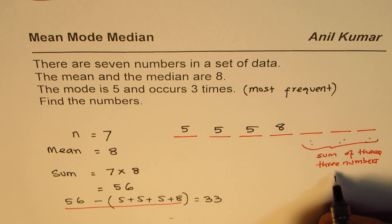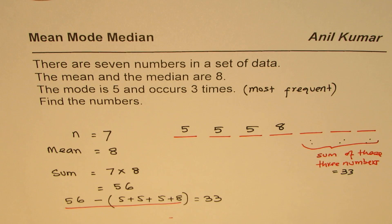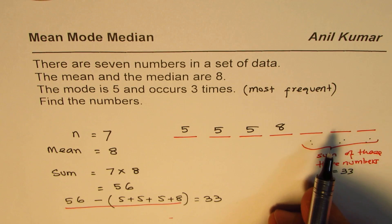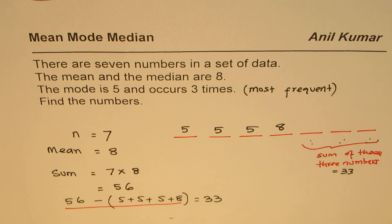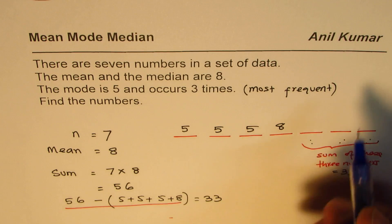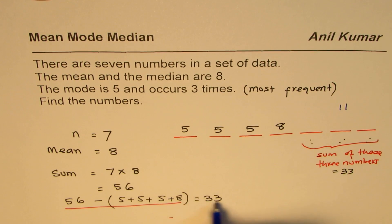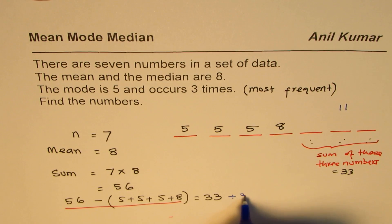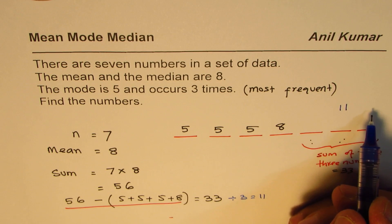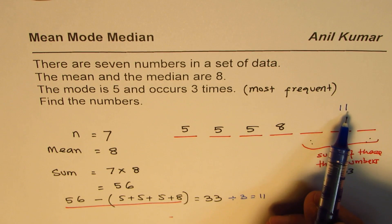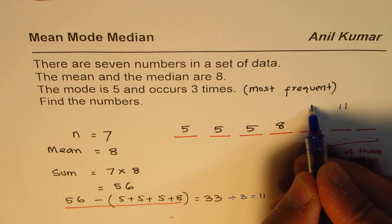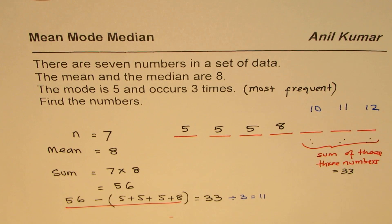The sum of the three remaining numbers should be 33, and they must be in increasing order. One approach: divide 33 by 3 to get 11, so we could try 11, 11, 11. But if we use three 11s, the mode would also be 11, conflicting with the mode being five. So 11, 11, 11 does not work.